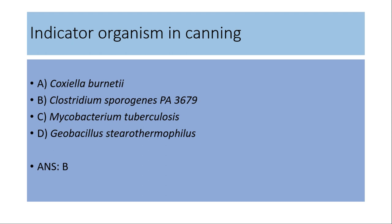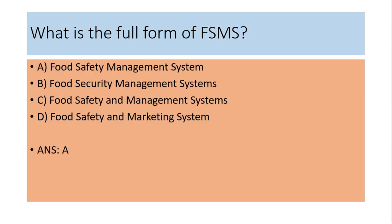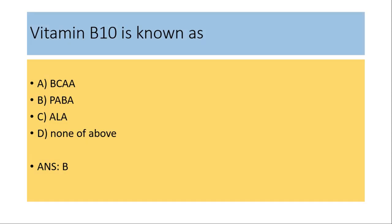What is the full form of FSMS? (a) Food Safety Management System, (b) Food Security Management System, (c) Food Safety and Management Systems, (d) Food Safety and Marketing Systems. The answer is (a) Food Safety Management System.